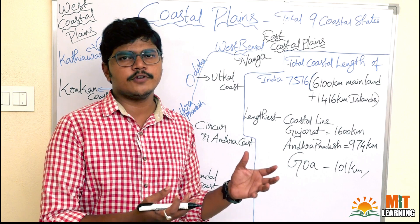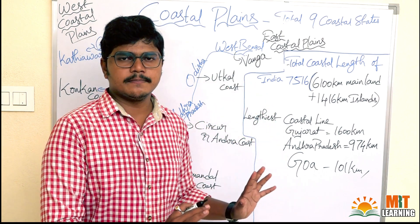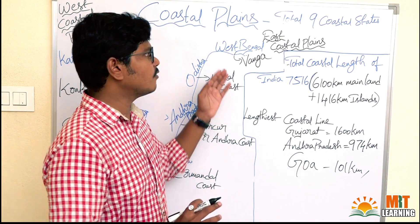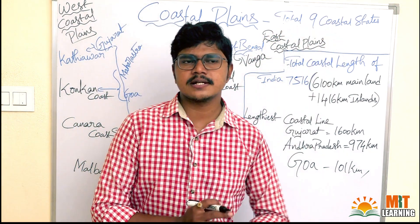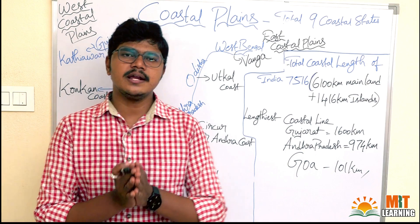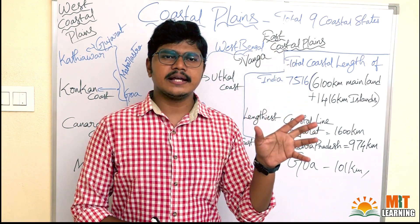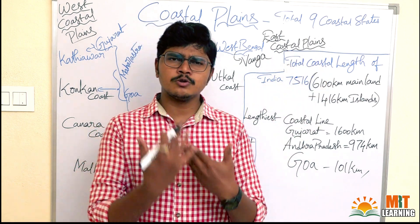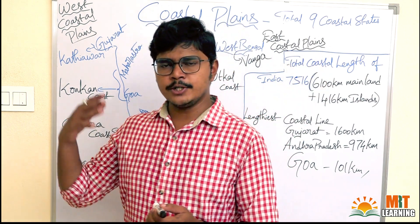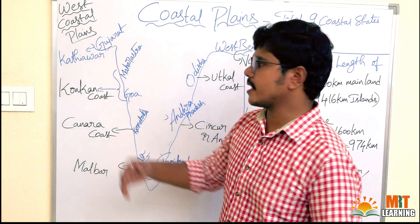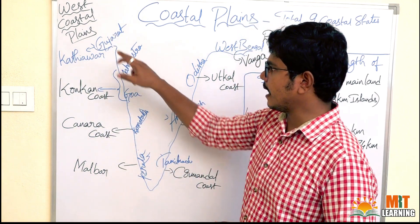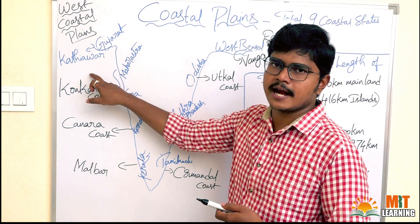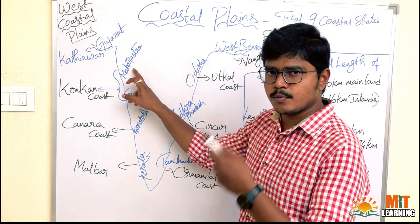We are going to discuss about South India only, because coastal states are found in South India. There are a total of nine coastal states out of 28 states. Coming to the left side, the west side: Gujarat (capital Gandhinagar) shares boundary with the Arabian Sea, and Maharashtra (capital Mumbai) also shares boundary with the Arabian Sea.